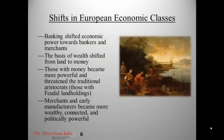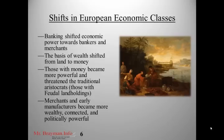This period also brought about a shift in European economic classes. As we saw in a previous lesson, banking became big at this time period. Banking shifted economic power towards bankers and merchants. Traditionally, the basis of wealth was land — if you had land, you could grow food, generate crop surpluses, and make money. Knights, dukes, and barons were people who had land; that's what made them rich and powerful. Starting in the Enlightenment period, those with money became much more powerful and started to threaten traditional aristocrats. Money is portable — you can't move land, but you can move money. So merchants and early manufacturers became much more wealthy, connected, and politically powerful.